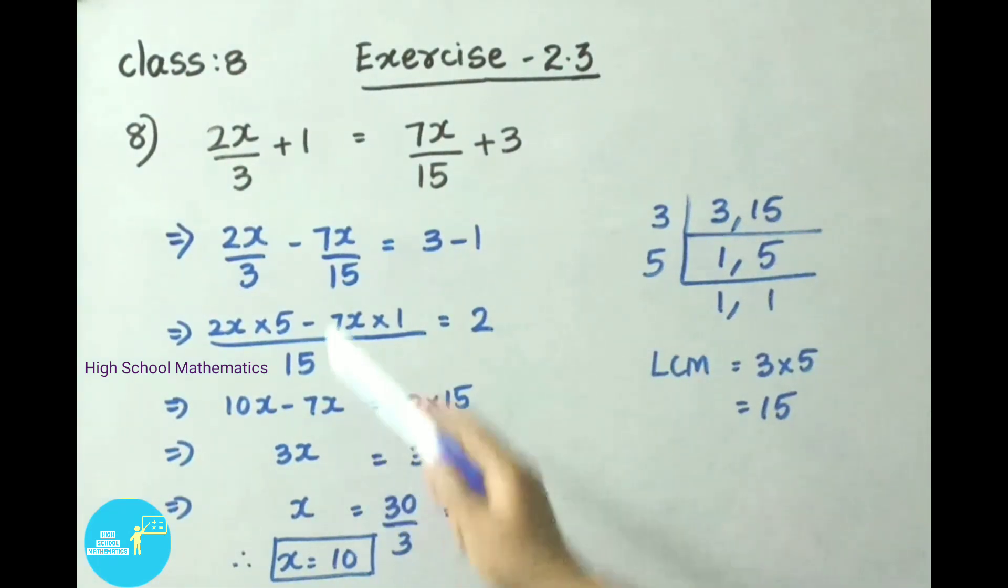That implies for 3 and 15 we are going to do LCM. Now let us see the LCM for 3 and 15. 3 table: 3 ones are 3, 3 fives are 15. 5 table: 5 ones are 5. Now LCM is 3 into 5, that is 15. So we have written here LCM value as 15.